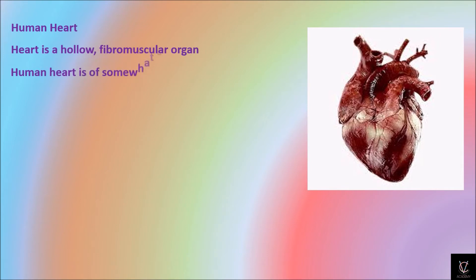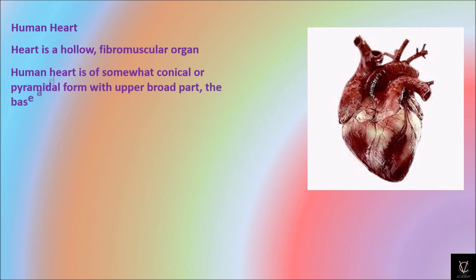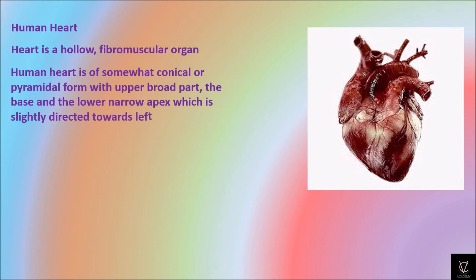The human heart is of a somewhat conical or pyramidal form, with the upper broad part called the base and the lower part narrower, with the apex slightly tilted towards the left. The size of the heart is approximately that of a closed fist — every person's heart is the size of his or her own fist.